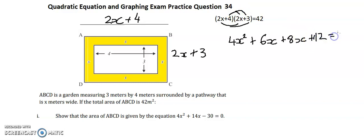And it is equal to 42. I'm just going to simplify this side. I've got 4x squared, then I've got 6x plus 8x and that equals 14x, and then I've got plus 12.